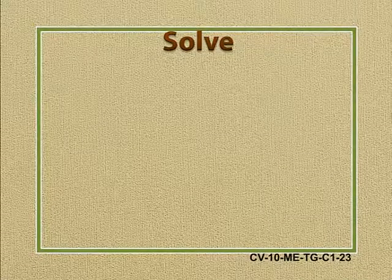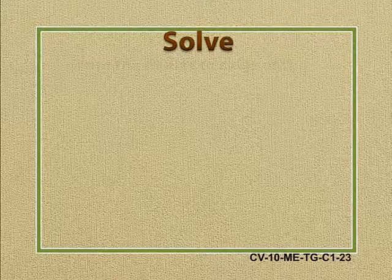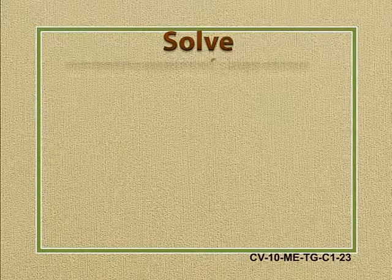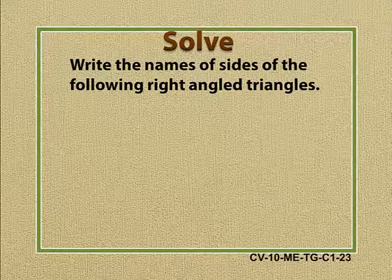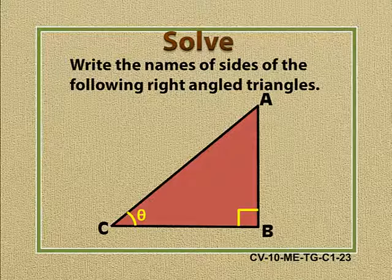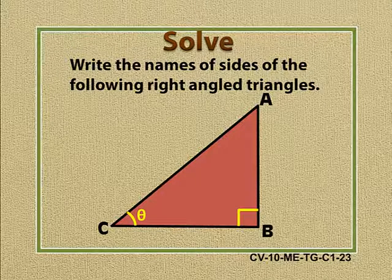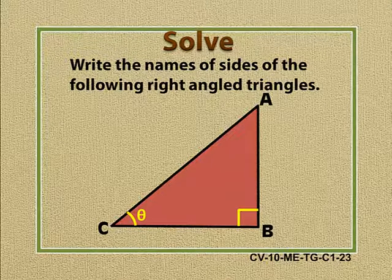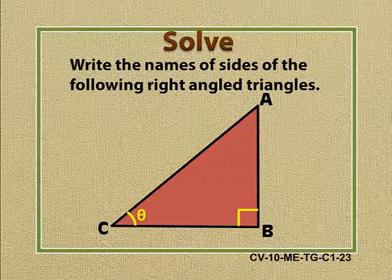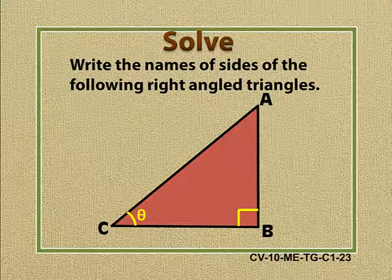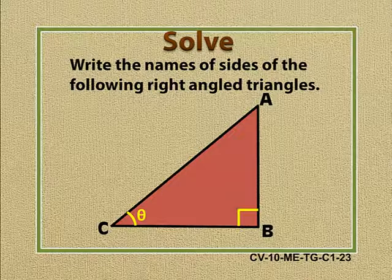You have followed the fundamentals of trigonometry. Now write the names of sides of the following right angle triangles. The first triangle has a 90 degree angle. Have you written down the answer? Check your answers.